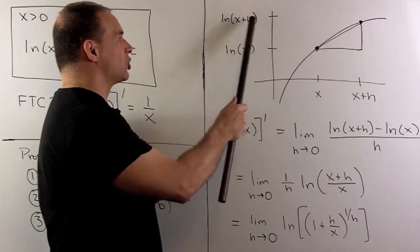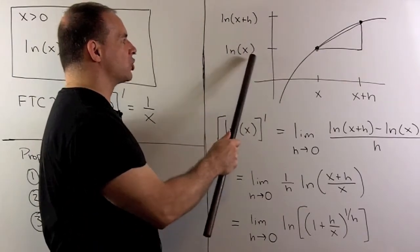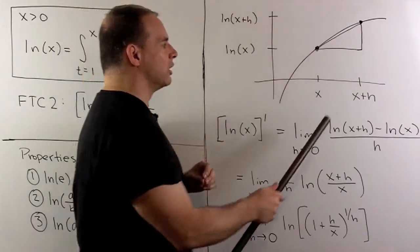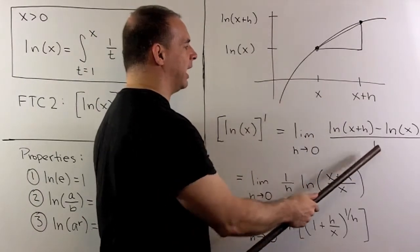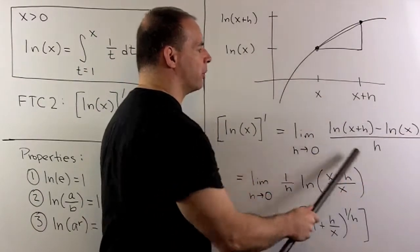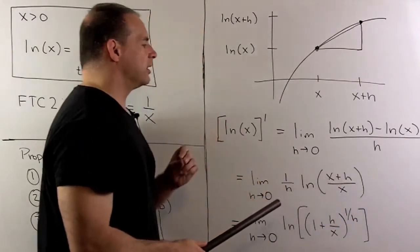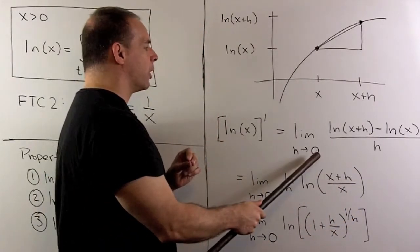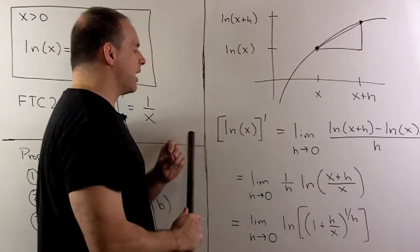Then we want to get the slope of this secant line. So it's going to be the rise over the run. The rise is going to be natural log of x plus h minus natural log of x. The run is going to be x plus h minus x, which is just going to be h. So here's the slope of our secant line, and I take the limit as we let h go down to zero. So that's going to be the definition of our derivative.